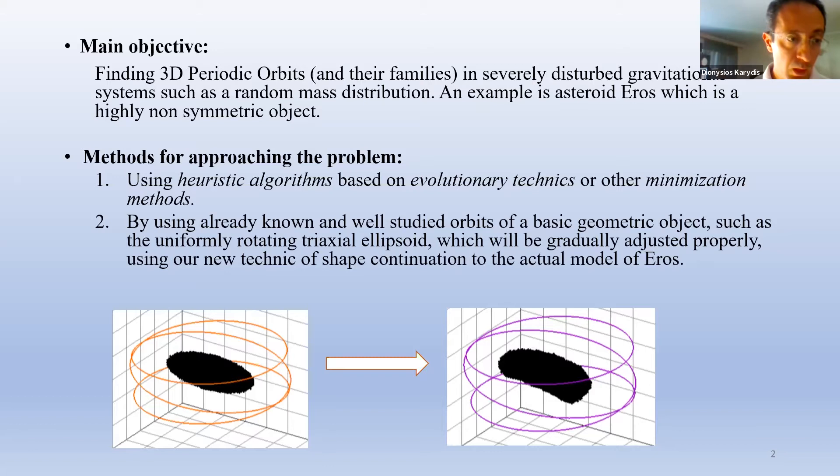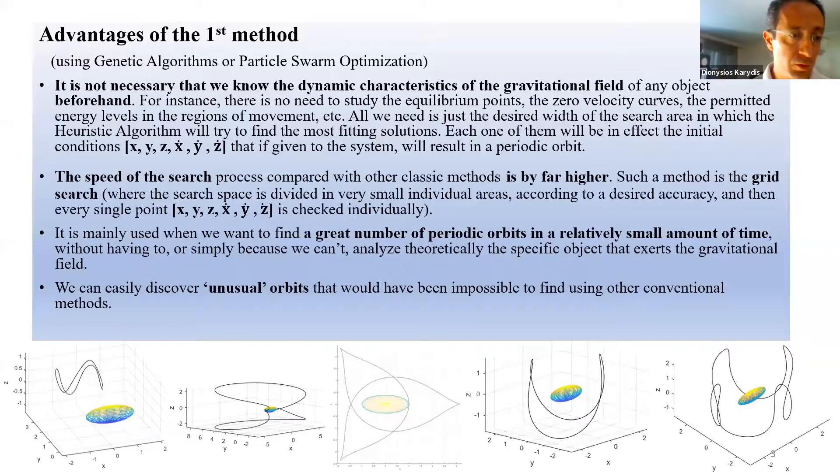The advantages of the first method are the following. First of all, it is not necessary that we know the dynamic characteristics of the gravitational field of any object beforehand. Secondly, the speed of the search process compared with other classic methods is by far higher. Furthermore, we can easily discover unusual orbits that would have been almost impossible to find using other conventional methods.